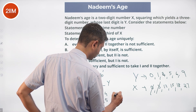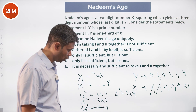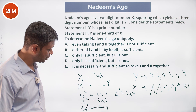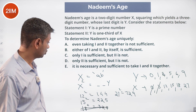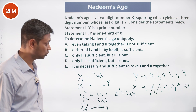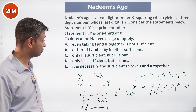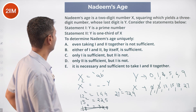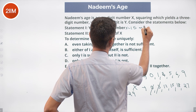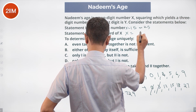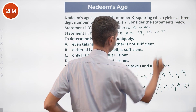X=27 → 27²=729, Y should be 27/3=9, and 729 ends in 9 — that works! So from Statement 2, X could be 12, 15, or 27. Statement 1 gives X could be 15 or 25; Statement 2 gives X could be 12, 15, or 27. Neither statement alone is sufficient.